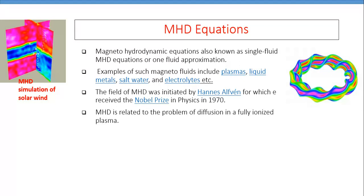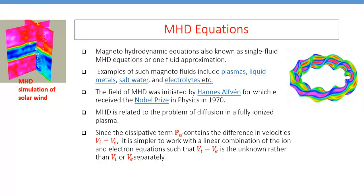MHD is related to the problem of diffusion as well because, as mentioned, MHD deals with a very dense plasma system or very high-density plasma system. As discussed in the lecture on plasma resistivity, when the density is very high or the plasma is very dense, the collision between two unlike particles gives rise to diffusion. We have calculated the resistivity there, and the dissipative or collisional term contains the difference in the velocities of two fluids.